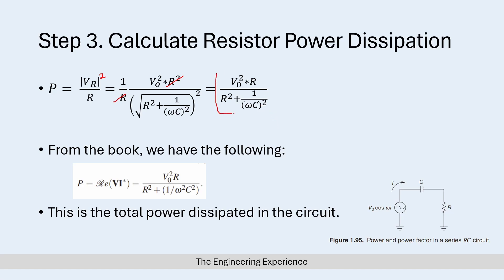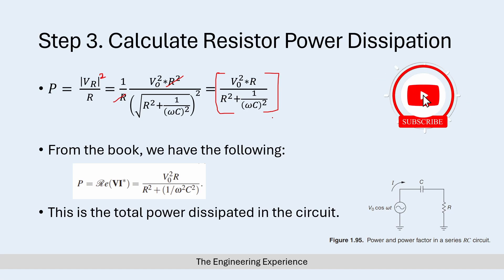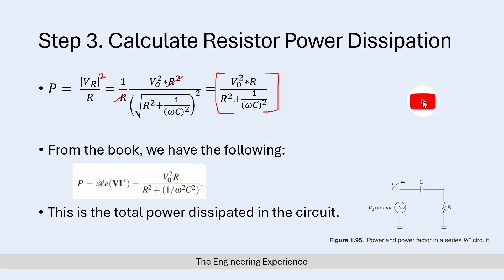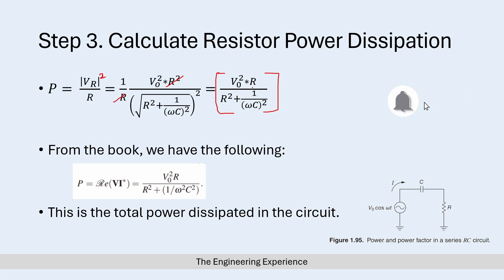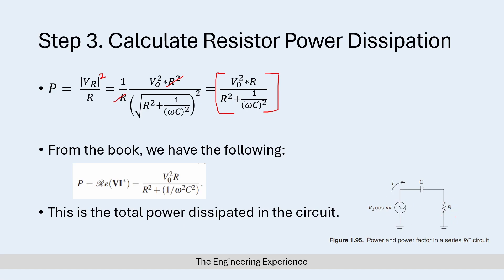Comparing the resistor power dissipation equation to the equation we found for the power dissipation of the full circuit — which was V₀²R over R squared plus one over omega squared C squared — we can see they are identical. This tells us that the power dissipation of the resistor equals the power dissipation of the full circuit, meaning all the power dissipated in this RC circuit is dissipated across the resistor.